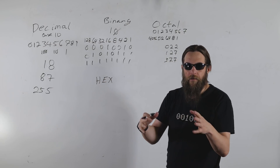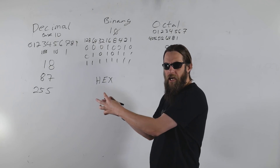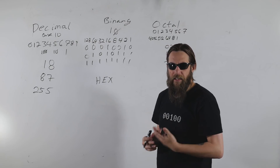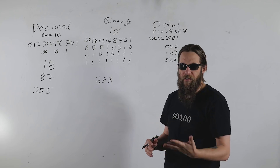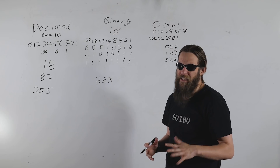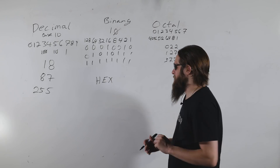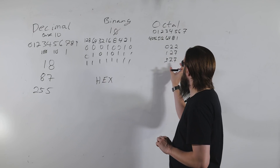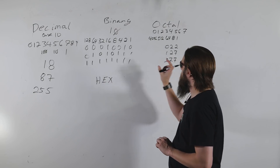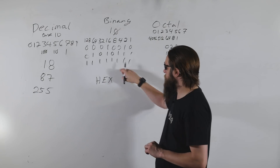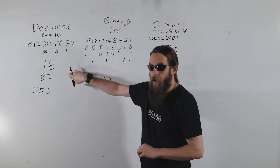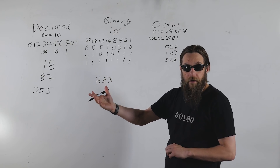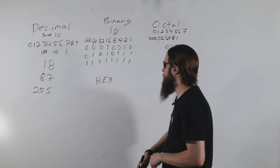Octal hasn't really been used as a representation in CPUs since the era of 12-, 24-, and 36-bit CPUs back in the 1950s and 60s. Back then it was heavily used because four octal digits equals a single 12-bit machine word.